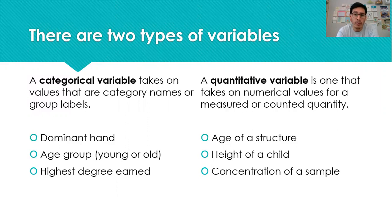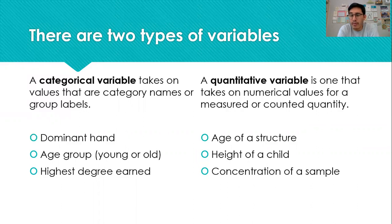Categorical variables are recorded with text, while quantitative variables are recorded with numbers. And often if the number is a measurement, there should be units. So age units could be years, height could be inches or feet or centimeters. Concentration of a sample might be parts per million, milligrams per deciliter, or some other type of unit. Generally, if it's a measurement, there will be some units associated with it.